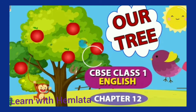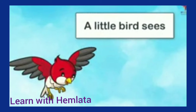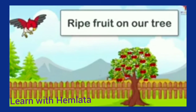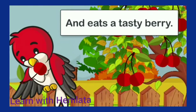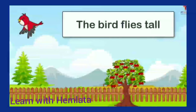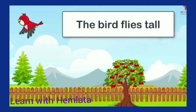Now we start the chapter 'Our Trees.' A little bird sees — as you can see in the picture, a little bird is there — a little bird sees ripe fruit on our trees. Right fruit on our trees, ready to eat, and it's a tasty berry.